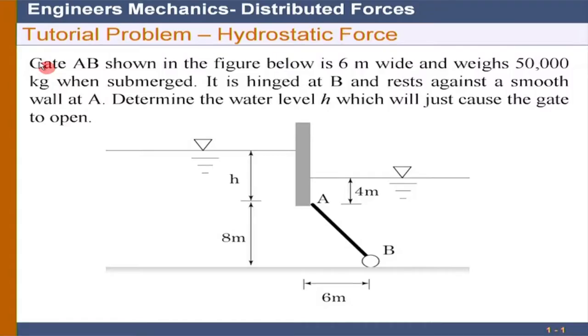We will go through the tutorial because I want to give you some time to look at the tutorial problems carefully. The first problem is about hydrostatic force. You have gate AB, which is hinged at B, so the gate can only open clockwise and can rotate about point B.